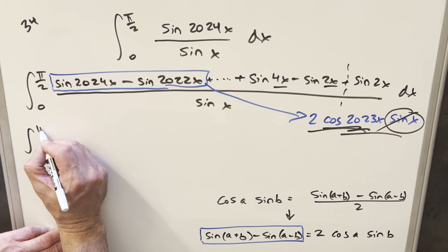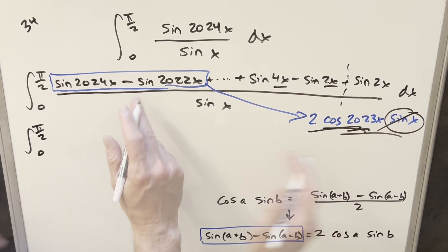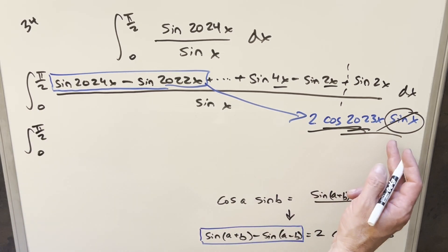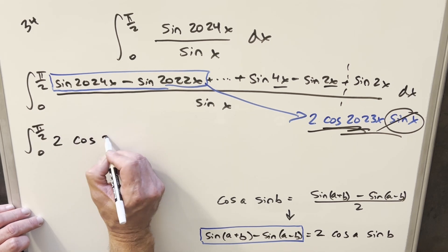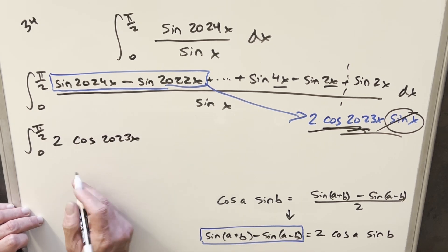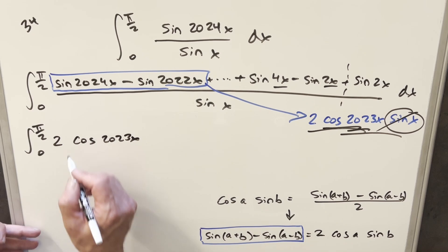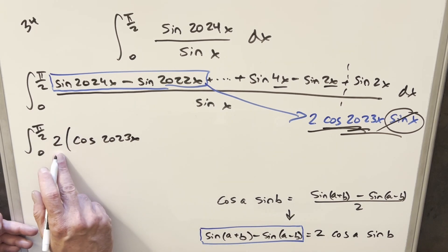So let's go ahead and just start rewriting these terms. So for this first one, we know what's going to happen. And the sine x is going to cancel out. We're going to be just left with 2 cosine 2023x. But it turns out there's going to be 2 in the formula for each one of these. So we can just factor the 2 out of all these.